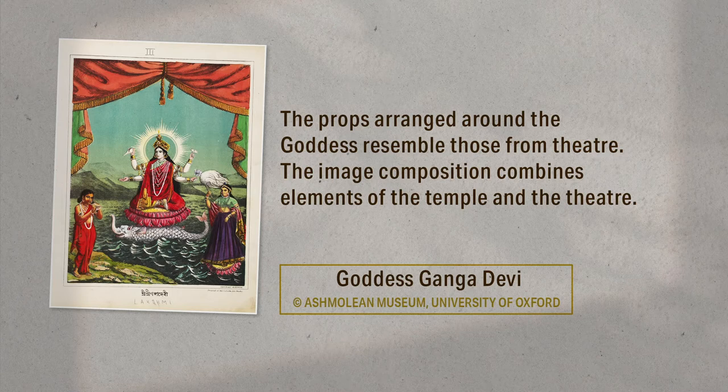Theatre gained great popularity in Calcutta around the same time as chromolithography. Amateur plays were performed in the houses of upper-class Bengalis, and several popular plays were staged in public theatres across the city. The figures created on stage and those printed on paper sometimes bore a striking resemblance to each other, like this image of the river goddess Ganga. The curtains above the goddess appear to be similar to the ones popularly used in theatre of those times. Pinney found that the visual language and narrative styles of many chromolithographs were indeed influenced by theatre.